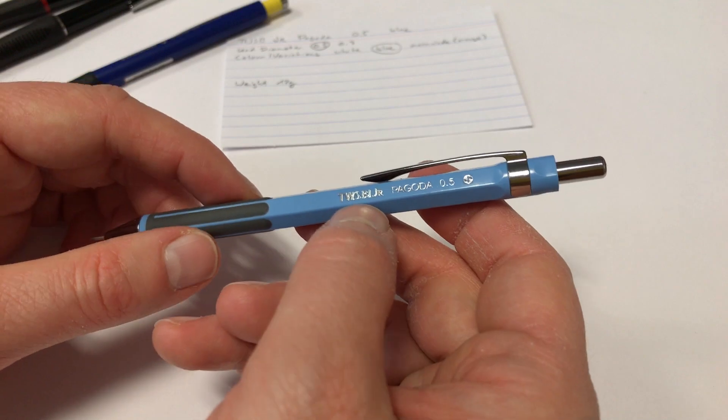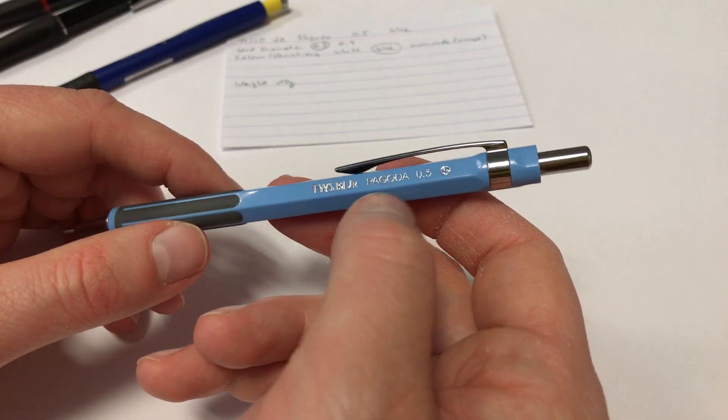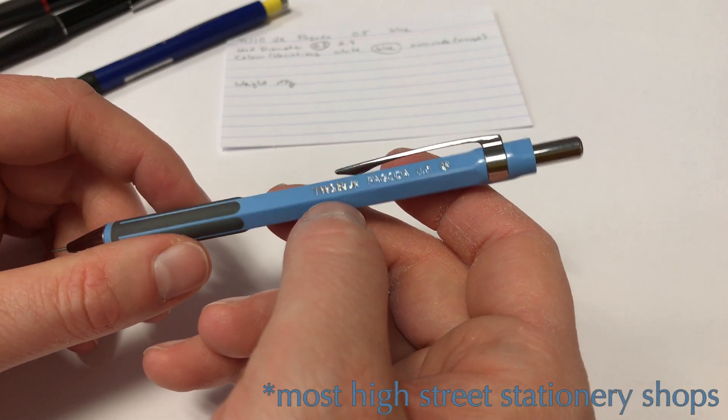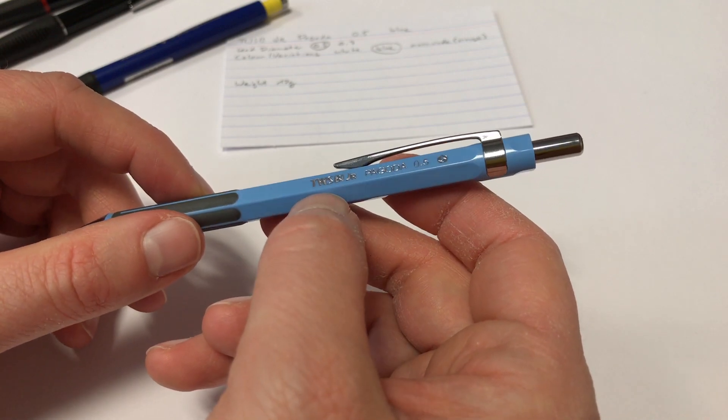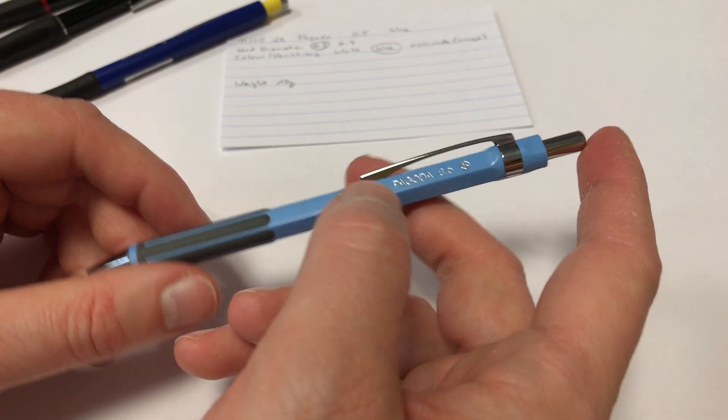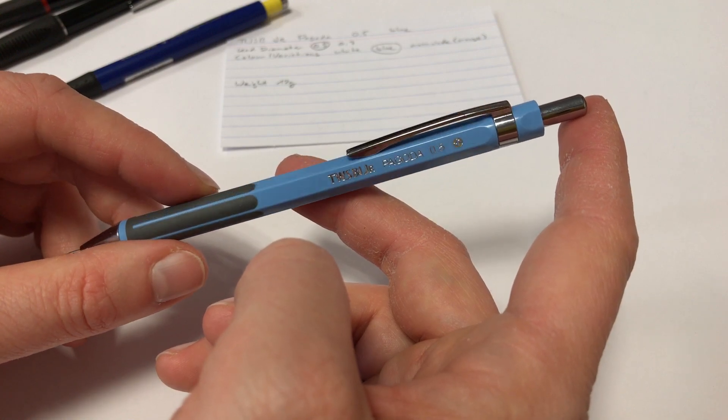Obviously a Rotring, at least here in the UK, you know they're rather common. You can buy the new Tikky in most high street shops. Whereas I've never seen the TWSBI mechanical pencils on the high street yet. But they are quite common in mail order shops here in the UK.